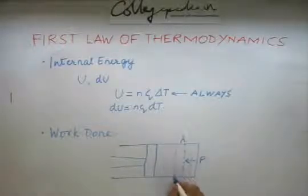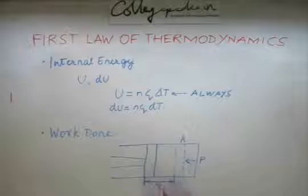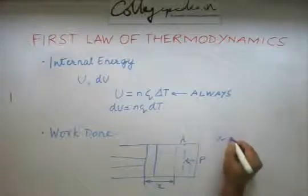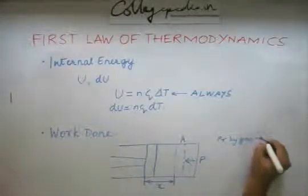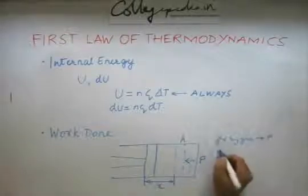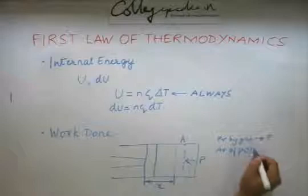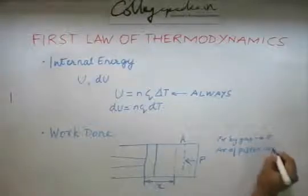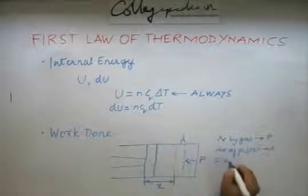So the gas here in this region, it is going to exert certain pressure on the piston and say the piston area is A. By this application of pressure by the gas, the piston moves by this distance x. So pressure by the gas is basically P. Area of piston is A. So the force applied is basically P into A.